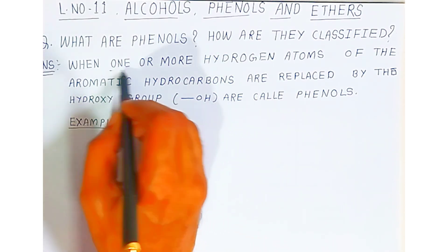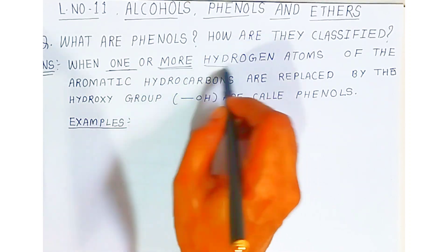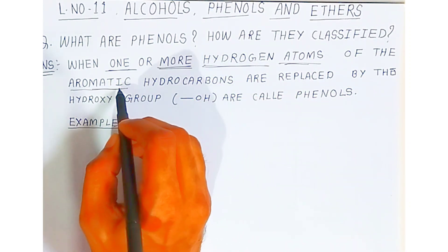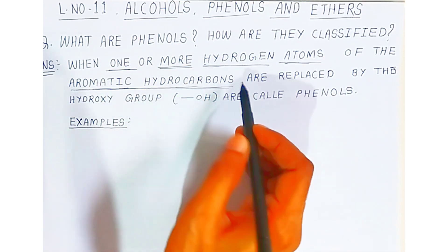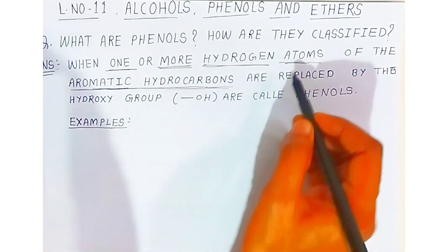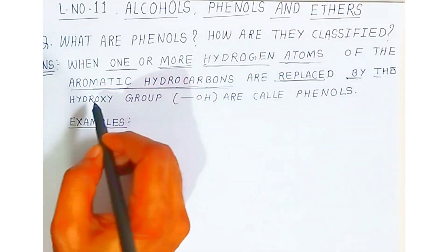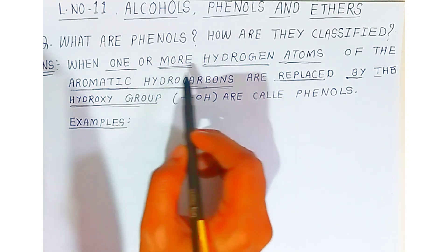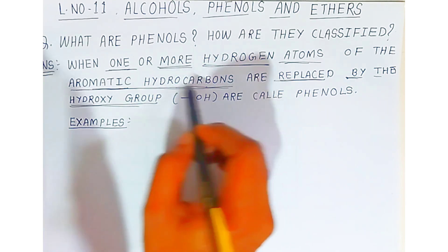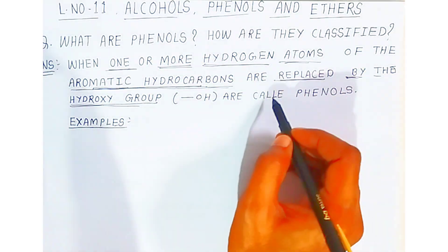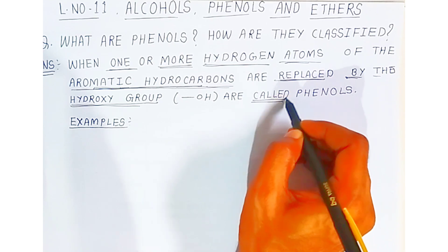When one or more hydrogen atoms of the aromatic hydrocarbons — which hydrocarbon have we taken here? Aromatic. So students, when one or more hydrogen atoms of the aromatic hydrocarbons are replaced by the hydroxyl group, that is minus OH, we call the compound obtained as phenols.